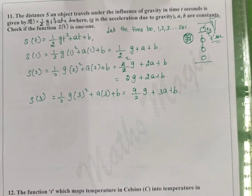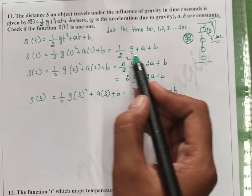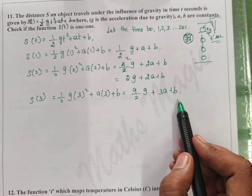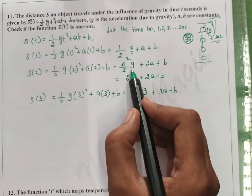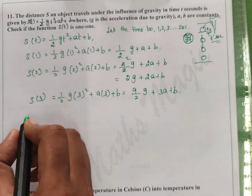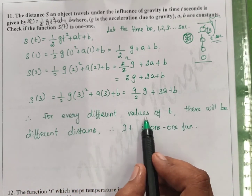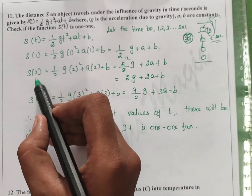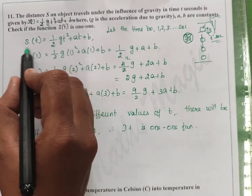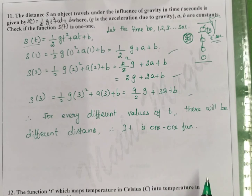This is a one-to-one function. One second gives one formula, two seconds gives another formula, three seconds gives another formula — each gives a different distance. For every different value of t — 1s, 2s, 3s — there will be a different distance in s(t). Since different inputs give different outputs, s(t) is a one-to-one function.